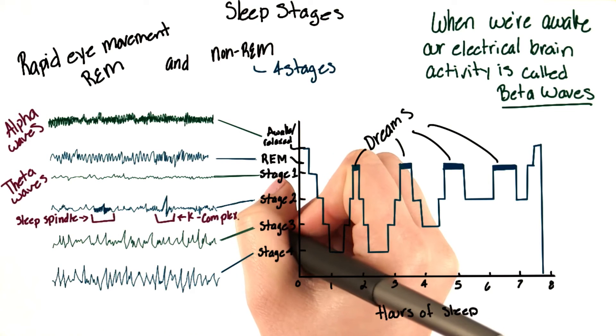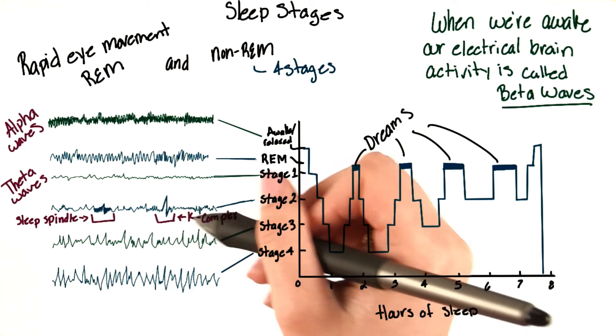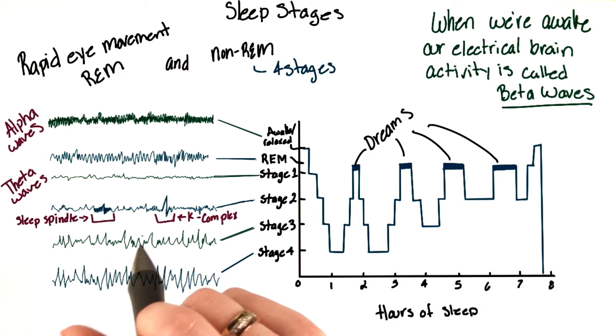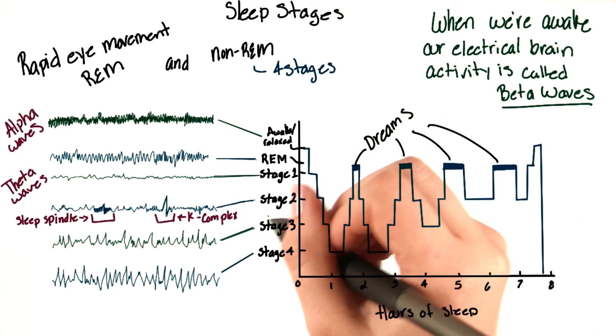And here, we see a K complex, which is a single but large high voltage spike in brain activity. Both of these things last about a second or two. It has been proposed by some researchers that these help us to disconnect from the outside world.